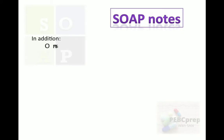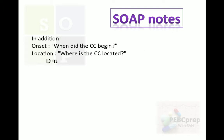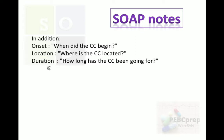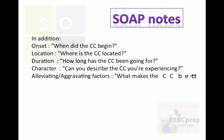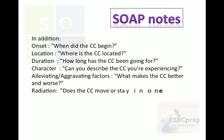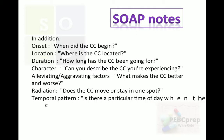More details in the subjective part: Onset — when did the chief complaint begin? Location — where is the chief complaint located? Duration — how long has the chief complaint been going on? Character — can you describe the chief complaint you are experiencing? Alleviating or aggravating factors — what makes the chief complaint better or worse? Radiation — does the chief complaint move or stay in one spot? Temporal pattern — is there a particular time of day when the chief complaint is better or worse?